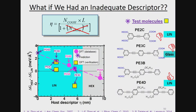In summary, for the first time we have succeeded in identifying descriptors for self-assembly of molecules on surfaces. These descriptors can be computed at essentially zero computational cost, depending only on the geometry and form of the isolated host and guest molecules in gas phase. Of course, what we computed is probably valid for a limited class of molecules and would have to be generalized for other kinds of molecules. Thank you.